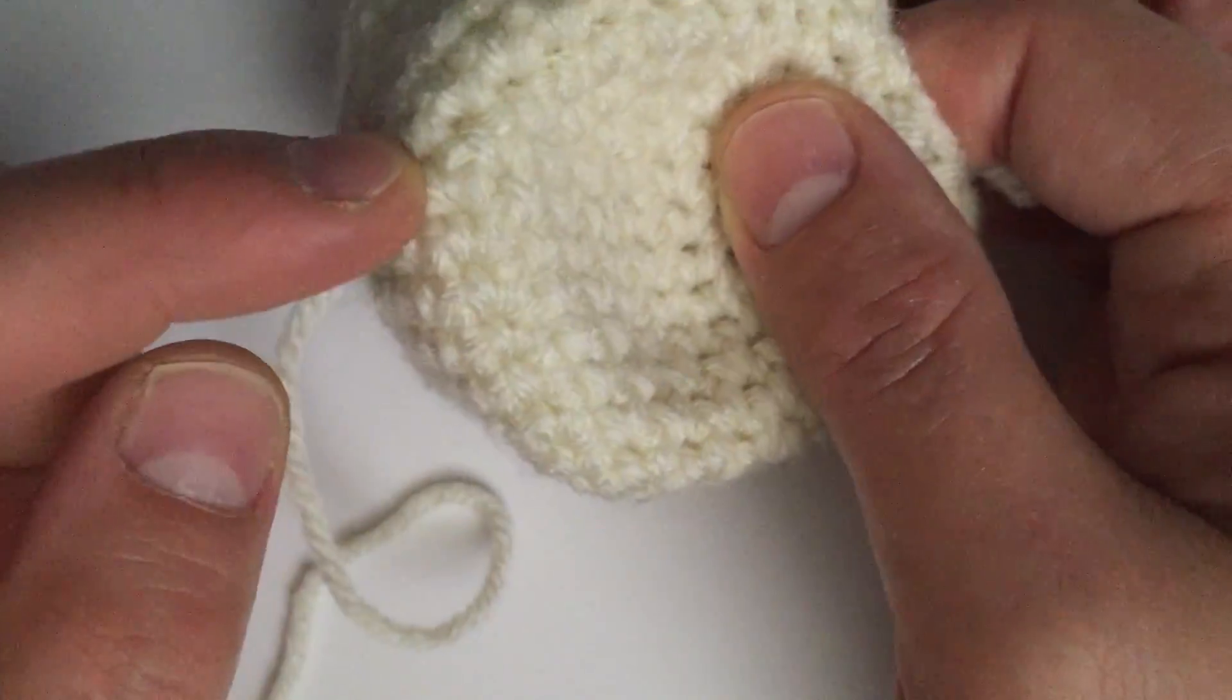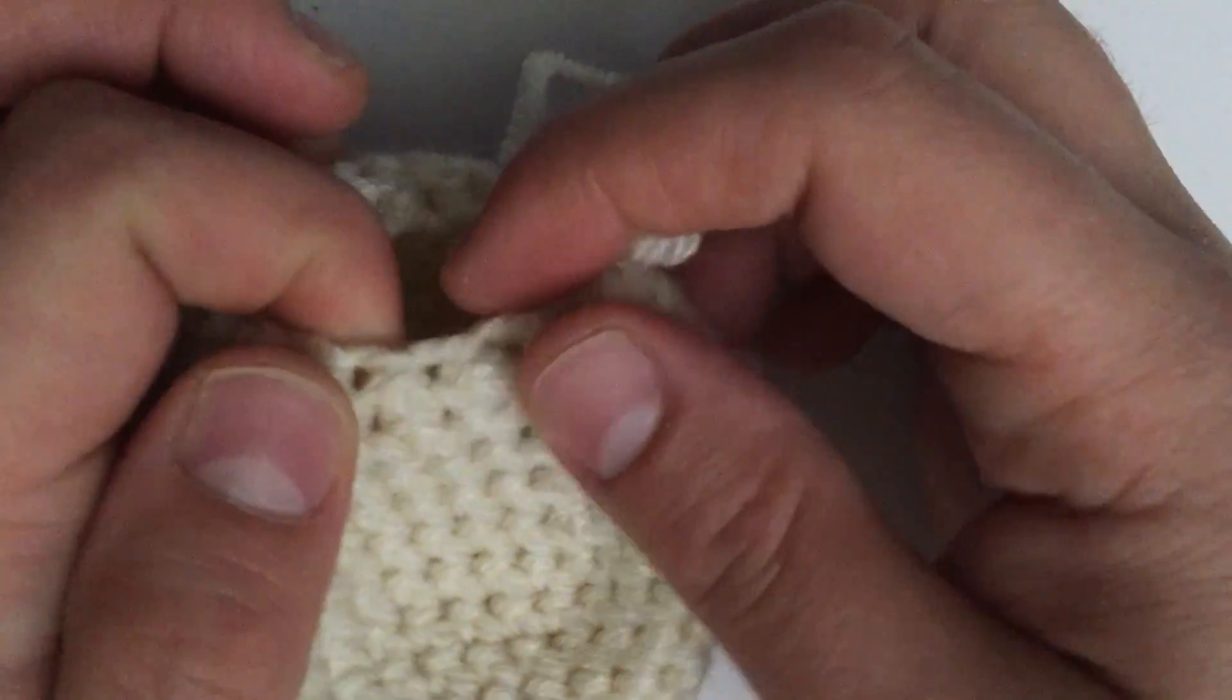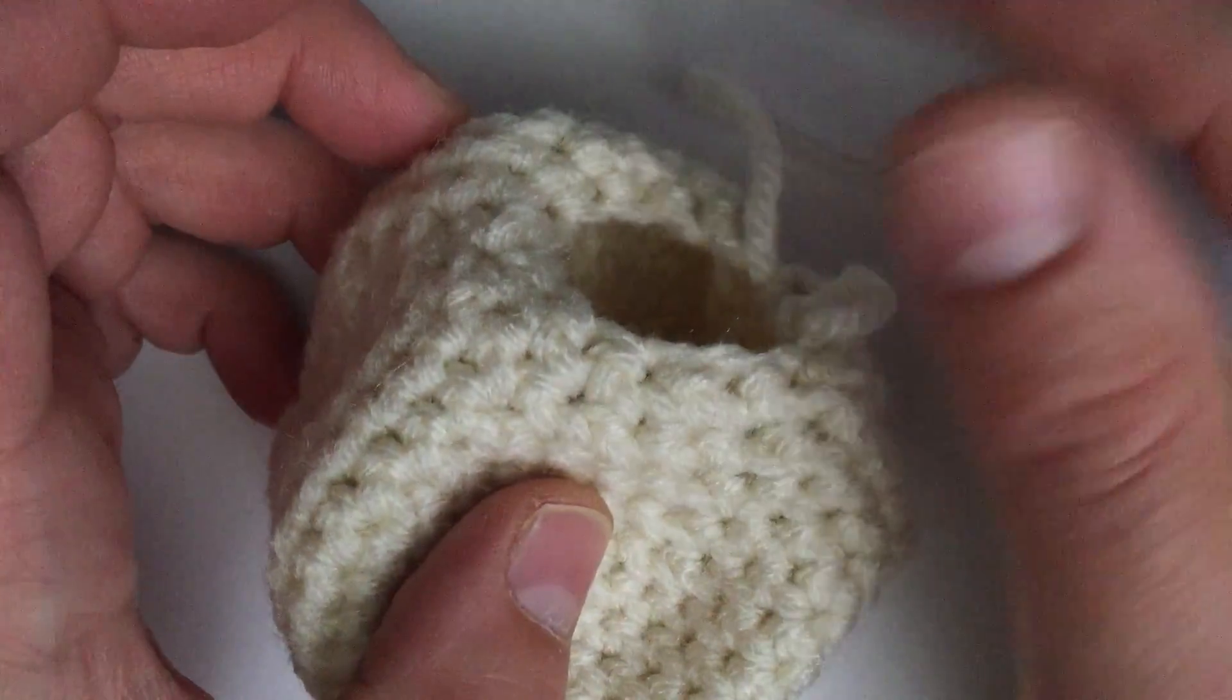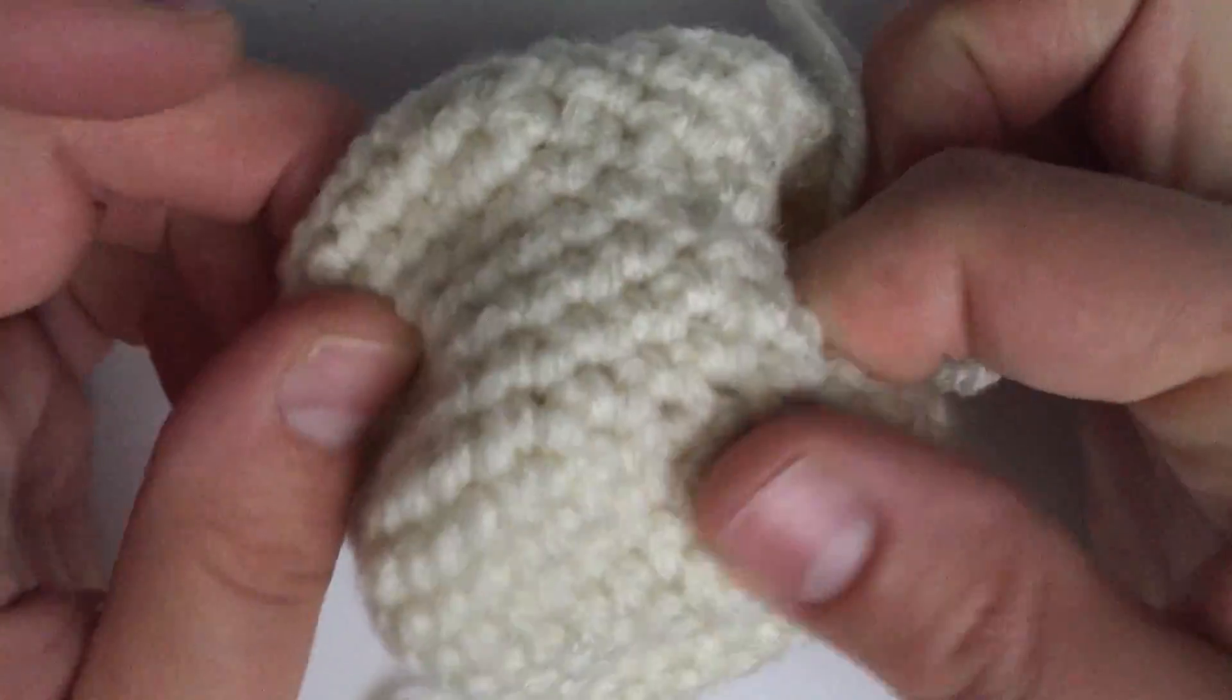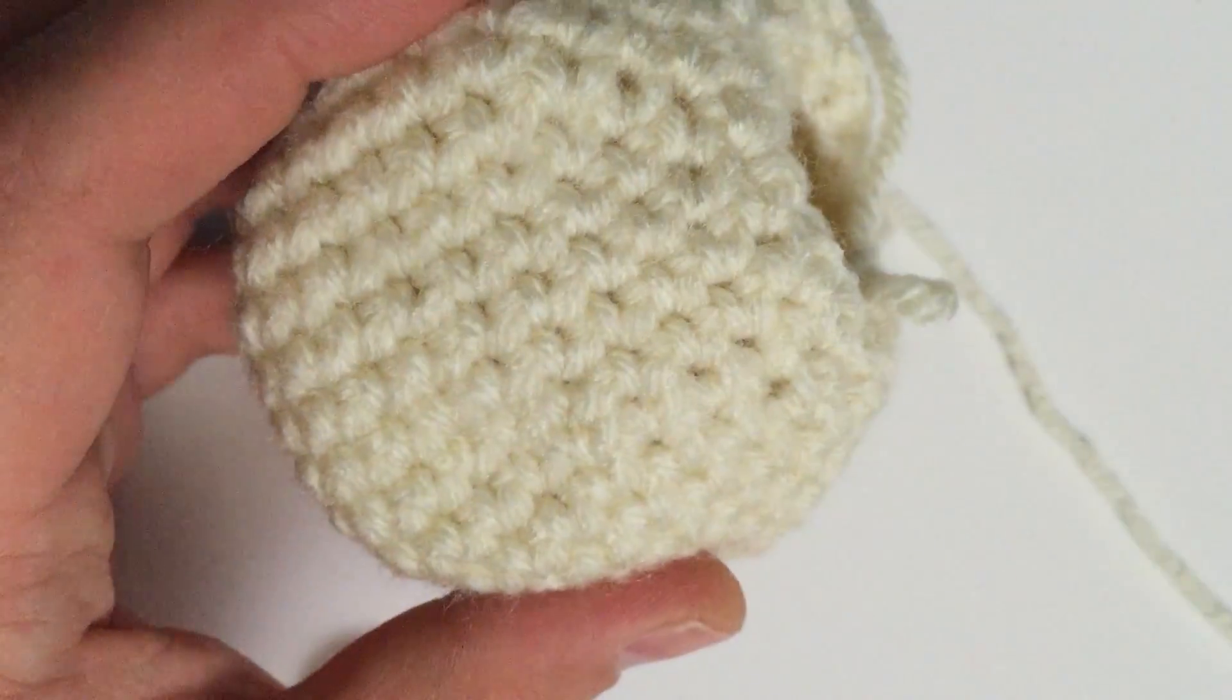Now I'm actually going to stop here at that first round of single crochet where you just do 12 all the way across without decreasing. The reason I'm stopping here is because we need to put in our safety eyes.